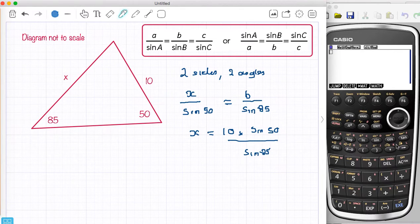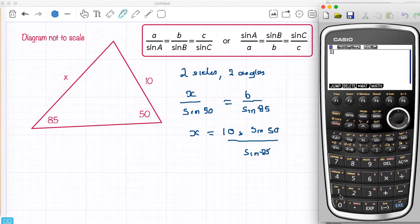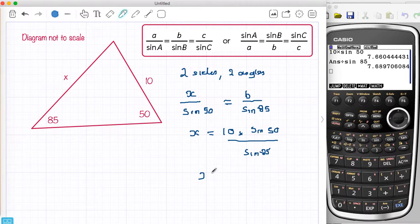Just one thing I need to be very careful about: how I put it into the calculator. I'm going to put 10 times sine 50 and then execute, and then divide it all by sine 85. You notice at the top of my screen I'm in degree mode. So I've got X equals 7.69. That's how I find the missing side.